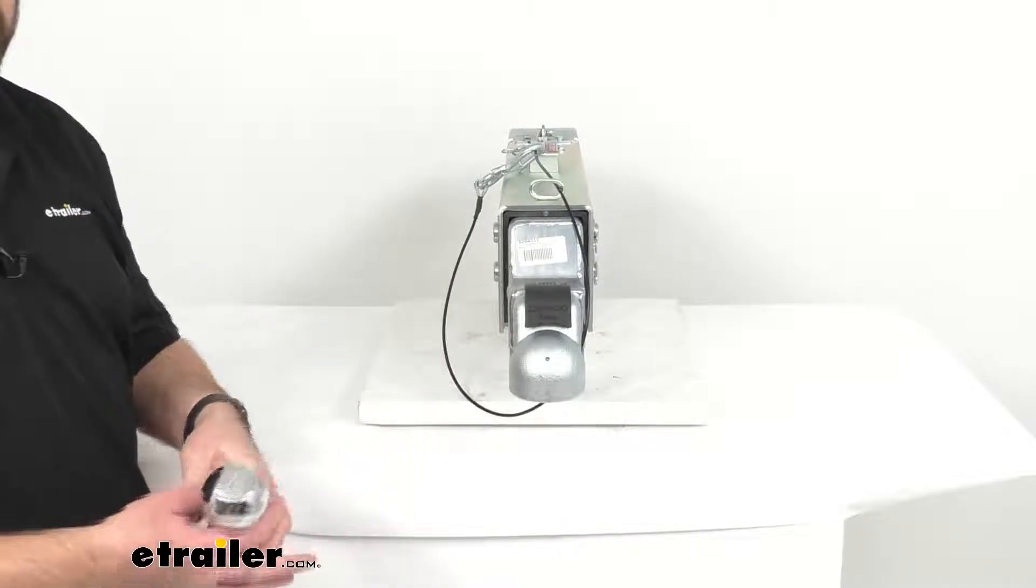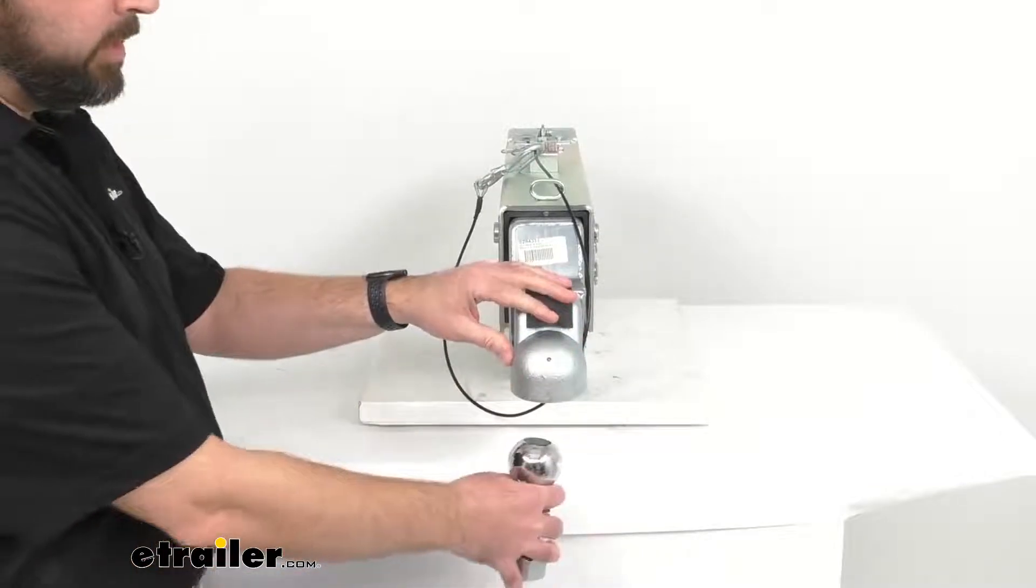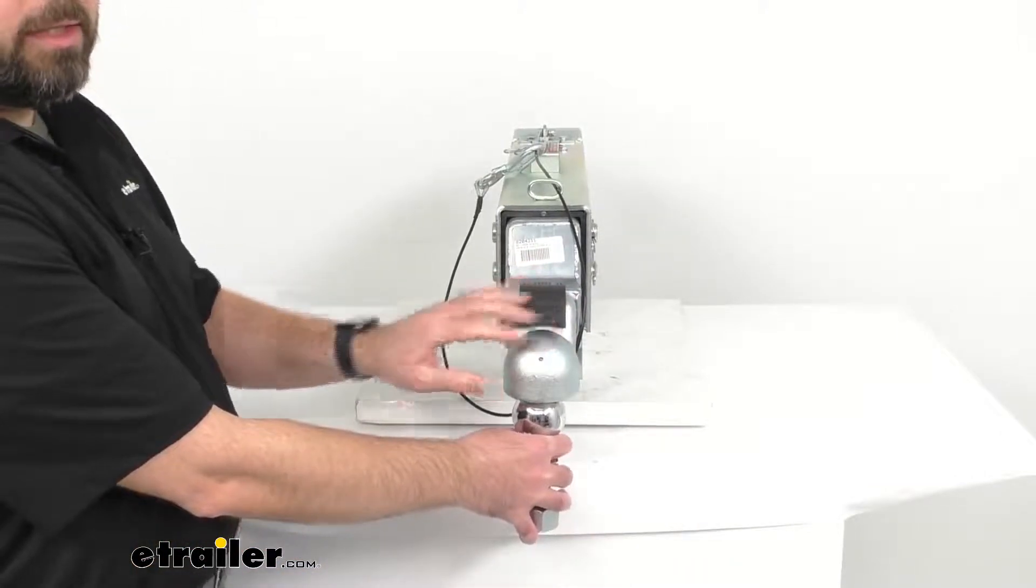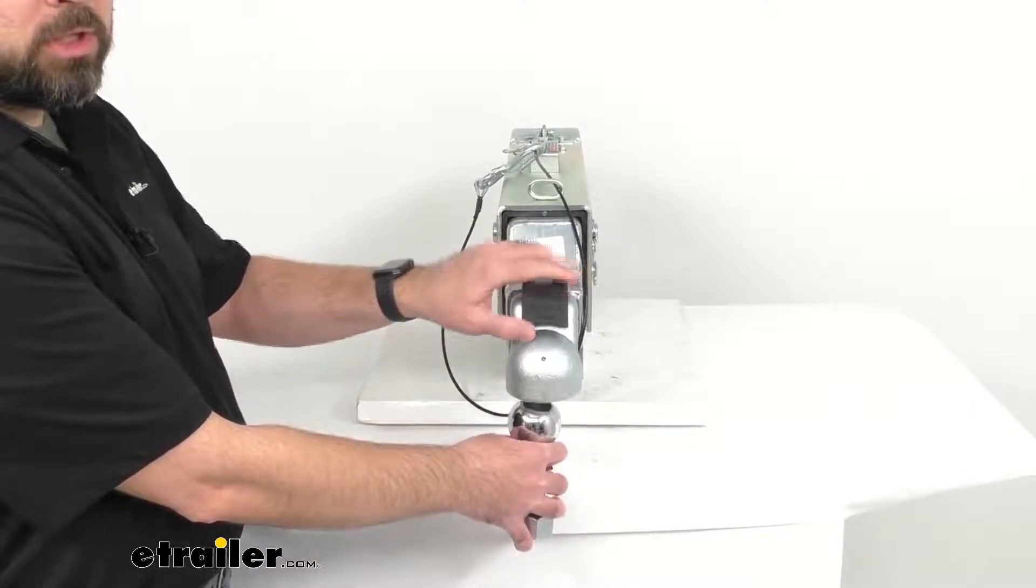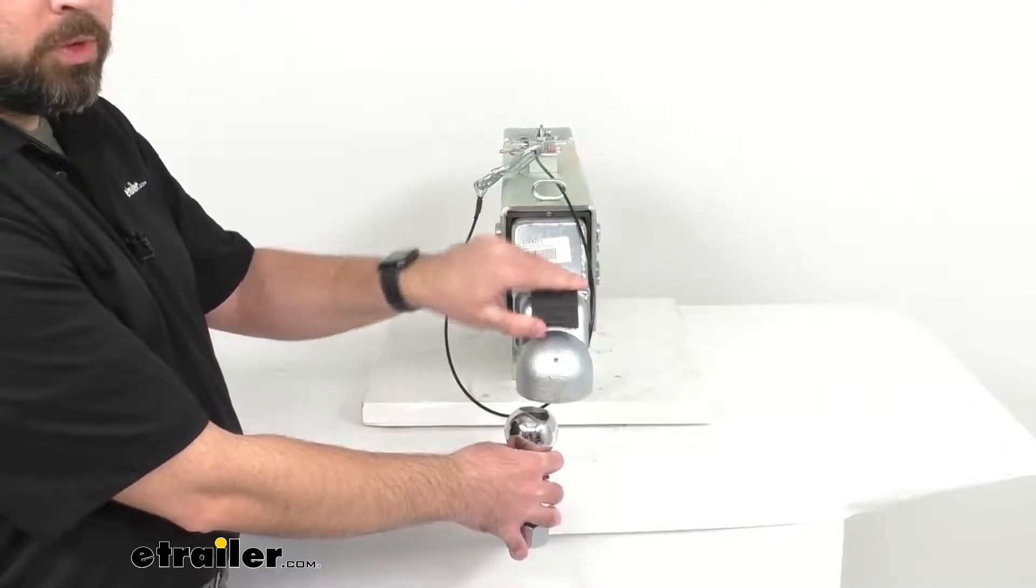You would just simply lower the coupler over the hitch ball and the latch will snap into place. And then you just lift up the latch and the coupler will release the ball.